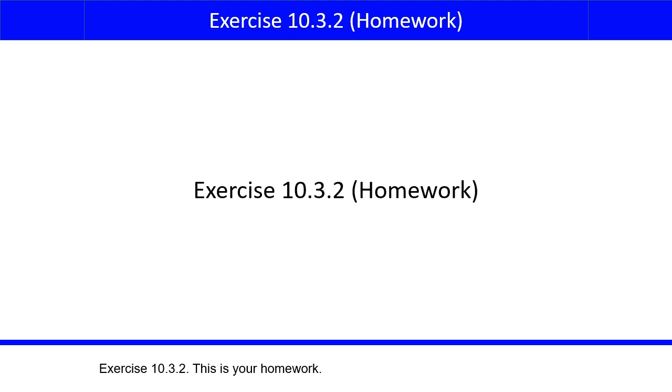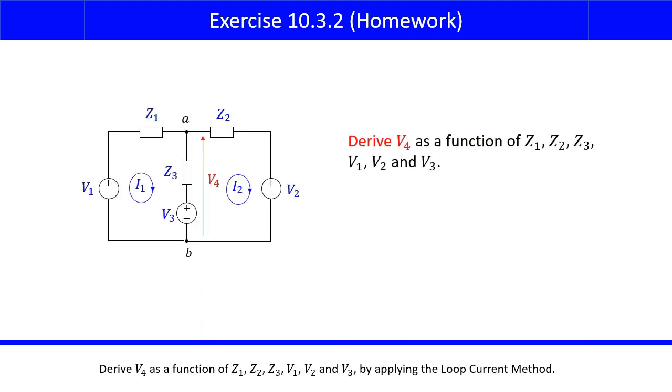Exercise 10.3.2. This is your homework. Derive V4 as a function of Z1, Z2, Z3, V1, V2, and V3, by applying the loop current method.